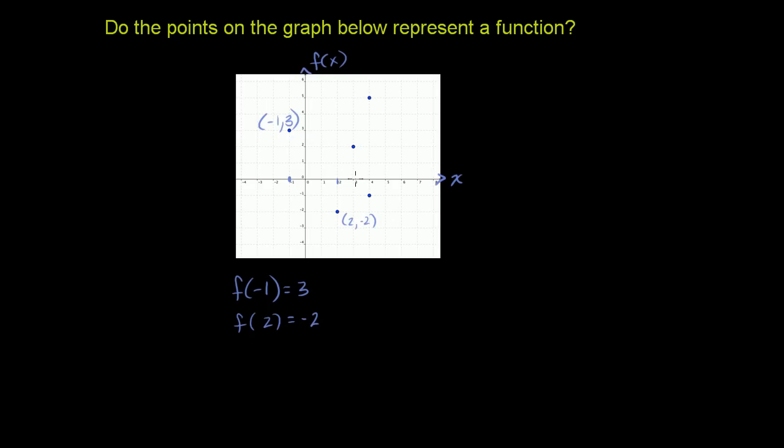Let's see this next value here. This is the point (3, 2) right there. So once again, if you give me 3 into my function, into my black box, I will output a 2. Pretty reasonable. No reason why these points can't represent a function so far.